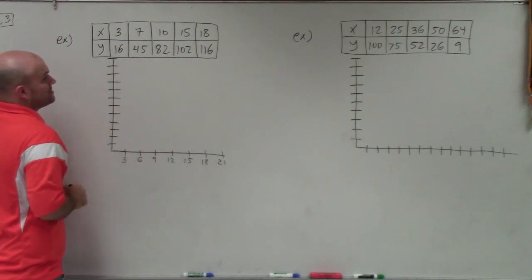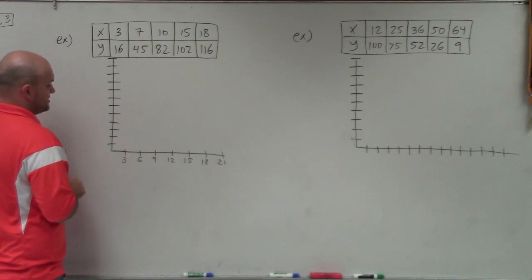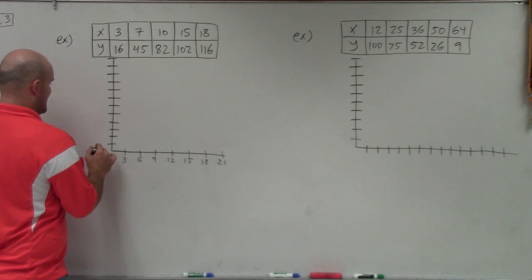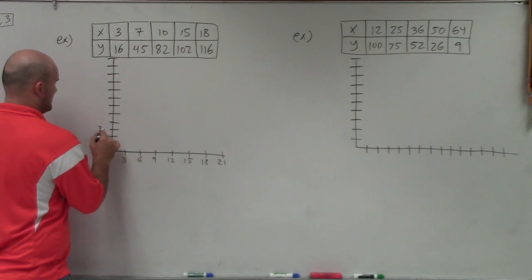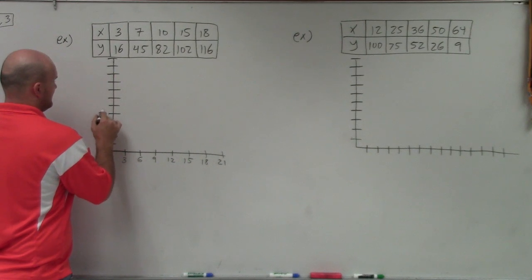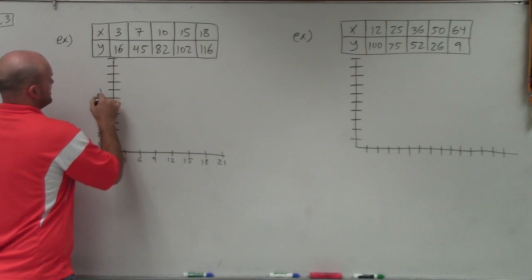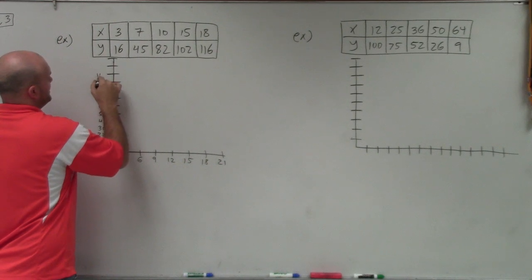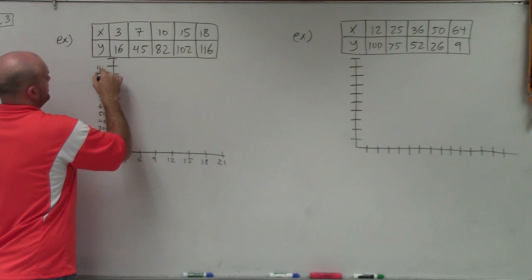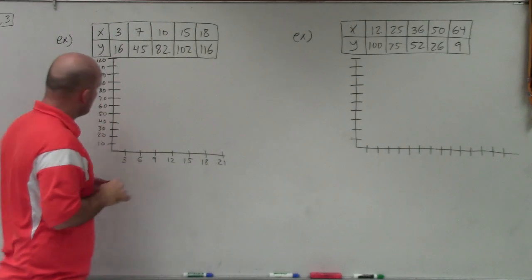On this side, though, I'm going to raise up a little bit higher. So I'm actually going to change the scale. Instead of going by 3's, I'm going to go by 10's. So I'd have 10, 20, 30, 40, 50, 60, 70, 80, 90, 100, 110, 120.